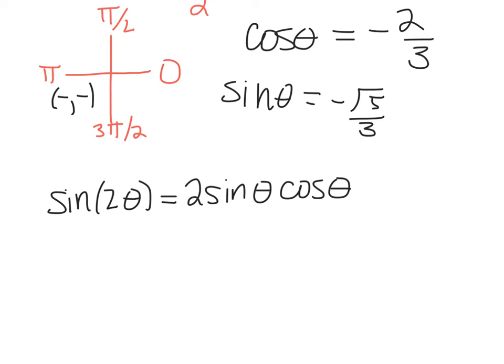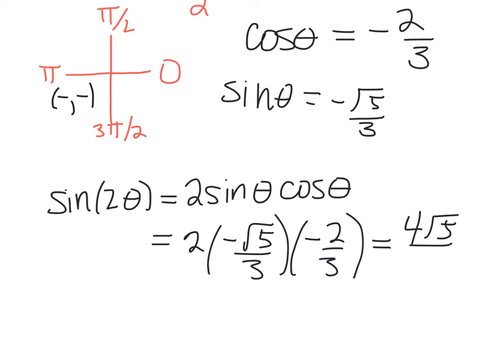So sin(2θ) is 2sinθcosθ, which is 2 times minus square root 5 over 3 times minus 2 over 3, which is equal to 4√5 over 9.